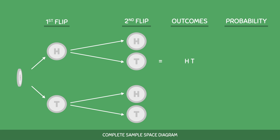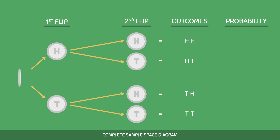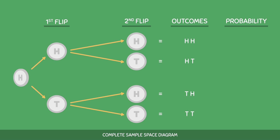Another outcome could be getting tails on the first flip and then getting tails on the second flip. We would write this outcome as TT. If we do this for each outcome, we get the sample space for tossing two coins, and we see that there are a total of 4 possible outcomes. Now to determine the probability of these outcomes, all we have to do is multiply the probability of each event together. We know that the probability of getting heads is 0.5, and the probability of getting tails is also 0.5.